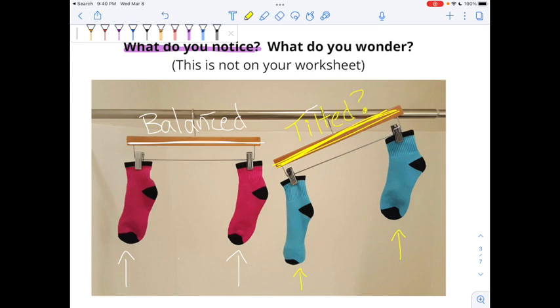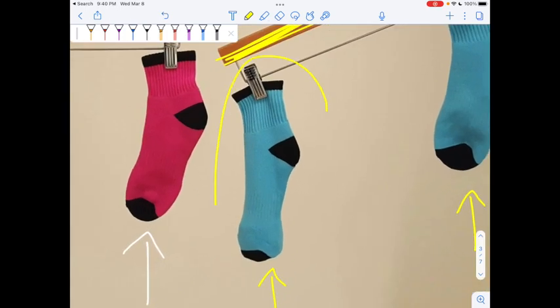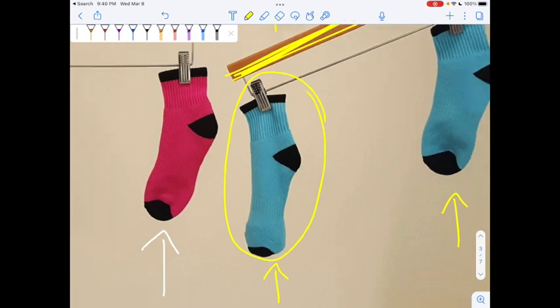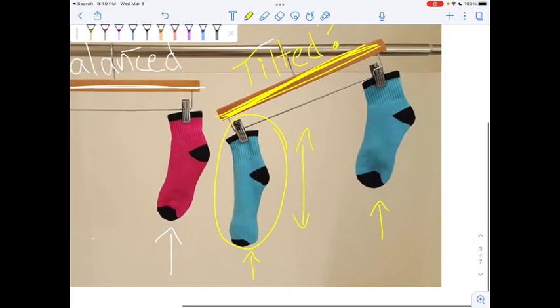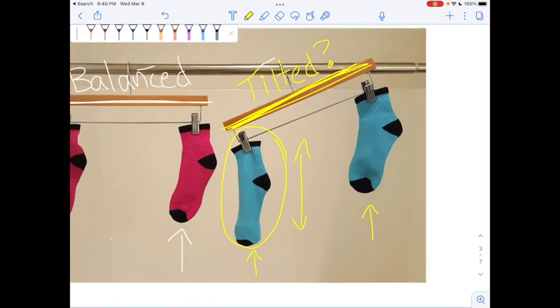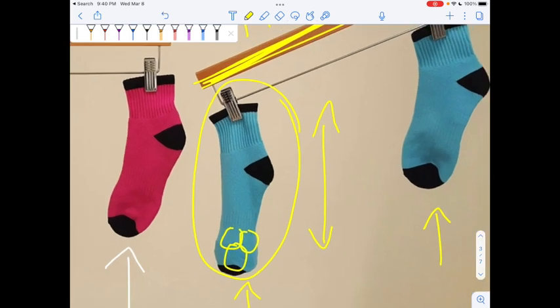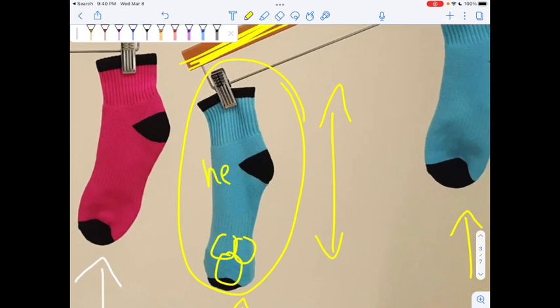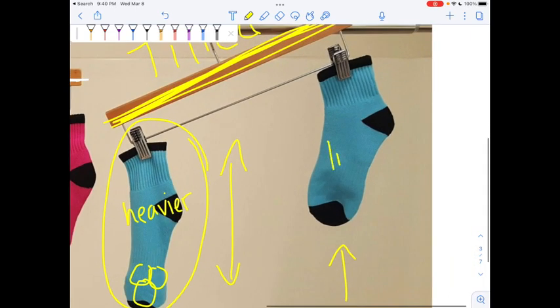So I'm wondering why is it tilted? And then I notice that this sock right here looks a little stretched out. It's taller than the other sock, than the other blue sock. So I wonder if there's something hiding inside this sock that we can't see. That makes this blue sock heavier than the other blue sock. Because it's heavier, then that would be a reason why it could be tilted.